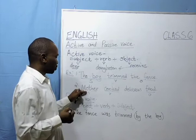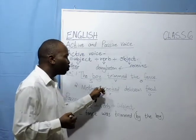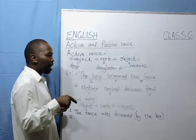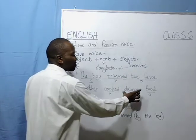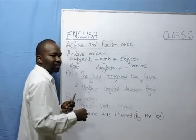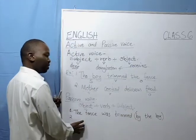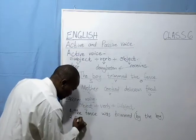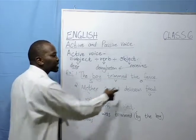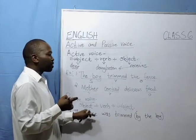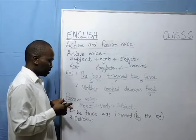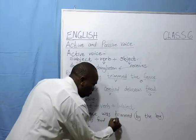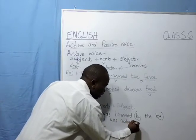Let's have another example using the sentence on the board: 'Mother cooked delicious food.' Let us start now with the object. One thing I have to mention is that whenever we have a determiner or an adjective before the object, it must form part of the passive sentence — we don't leave it out. So we start by writing 'delicious food.' What happened to the food? Delicious food was cooked by mother — though I've said it is not necessary to write the subject.